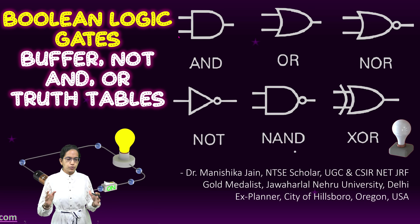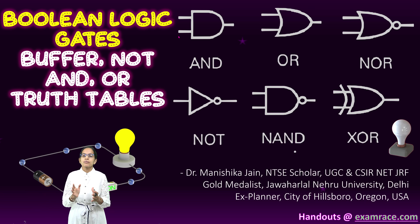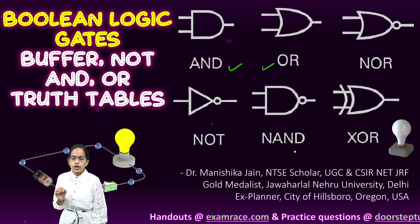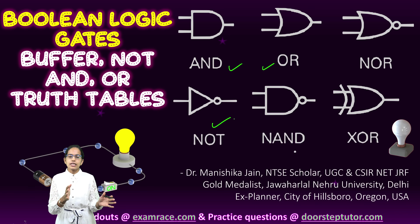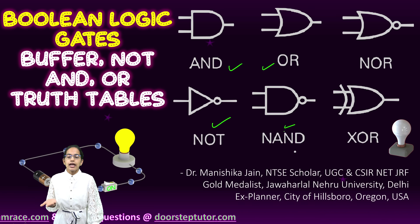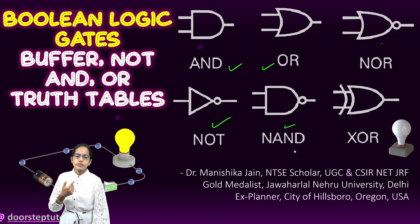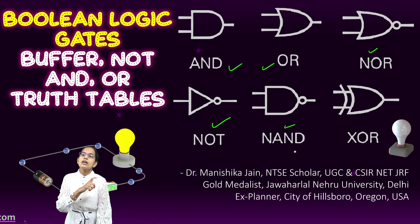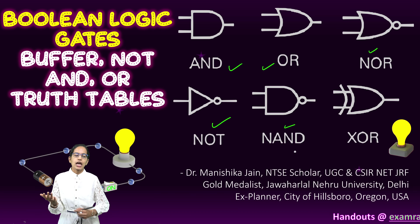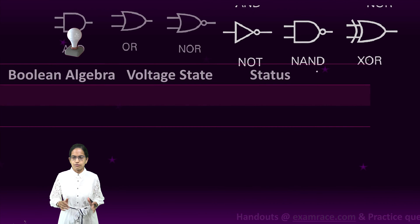To begin with Boolean logic, there are seven common gates we would understand. The three basic gates are AND, OR, and NOT. With combinations of these we have further gates — NAND, which is NOT plus AND; NOR, which is NOT plus OR; and also XOR and XNOR. Those are the various gates we would understand.